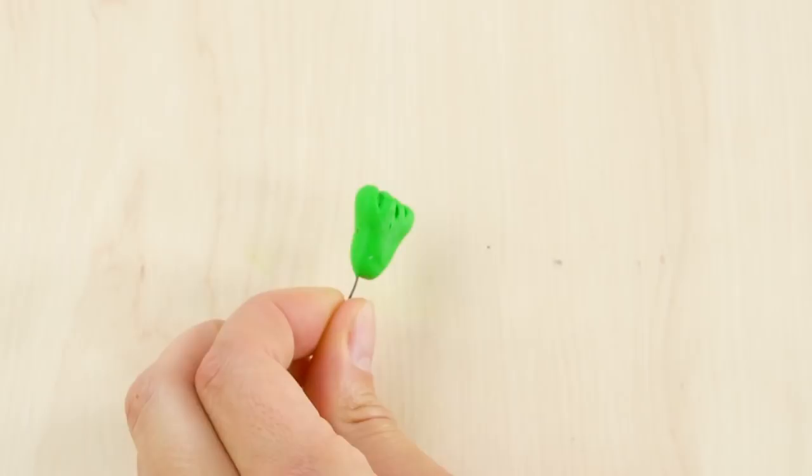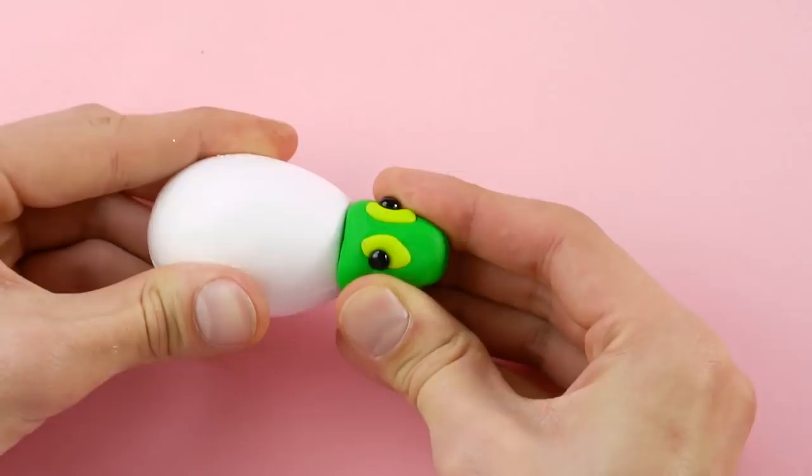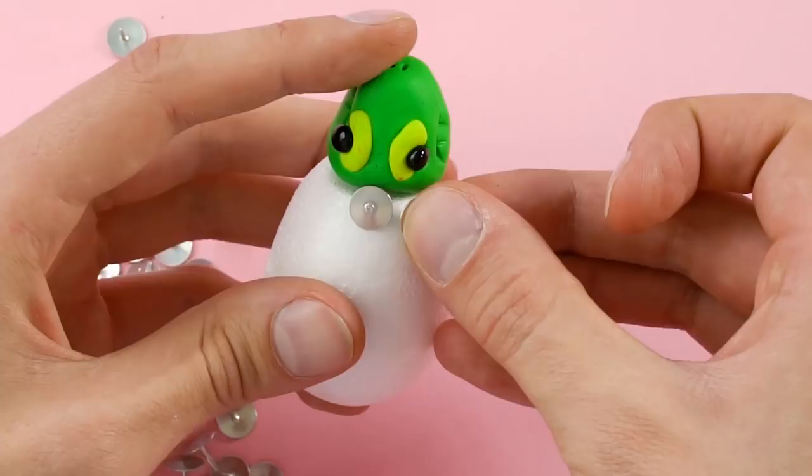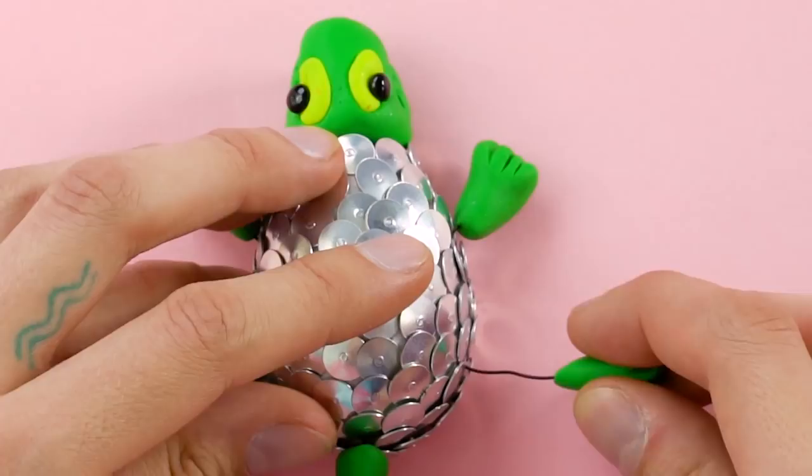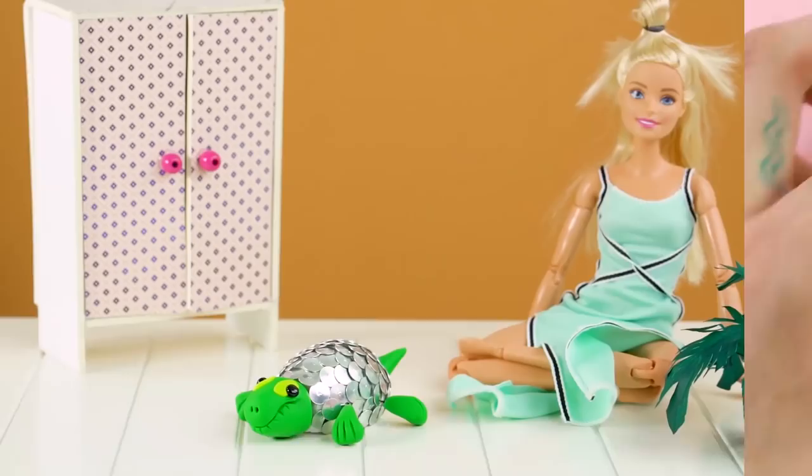Now that you've got the head and the feet, let's make the body. Grab a piece of egg-shaped foam and cut it to the right shape. Push the turtle head into place. Silver thumbtacks make an excellent turtle shell. Push them into the foam in this cool pattern. When you're done, add the legs and tail. This shiny turtle is ready for action. He really likes to snuggle.